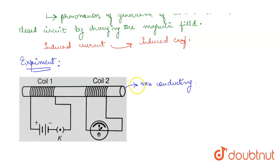Insert them over a non-conducting cylindrical rod. Coil one has to be connected to a battery and a key, and coil two is to be connected to a galvanometer.